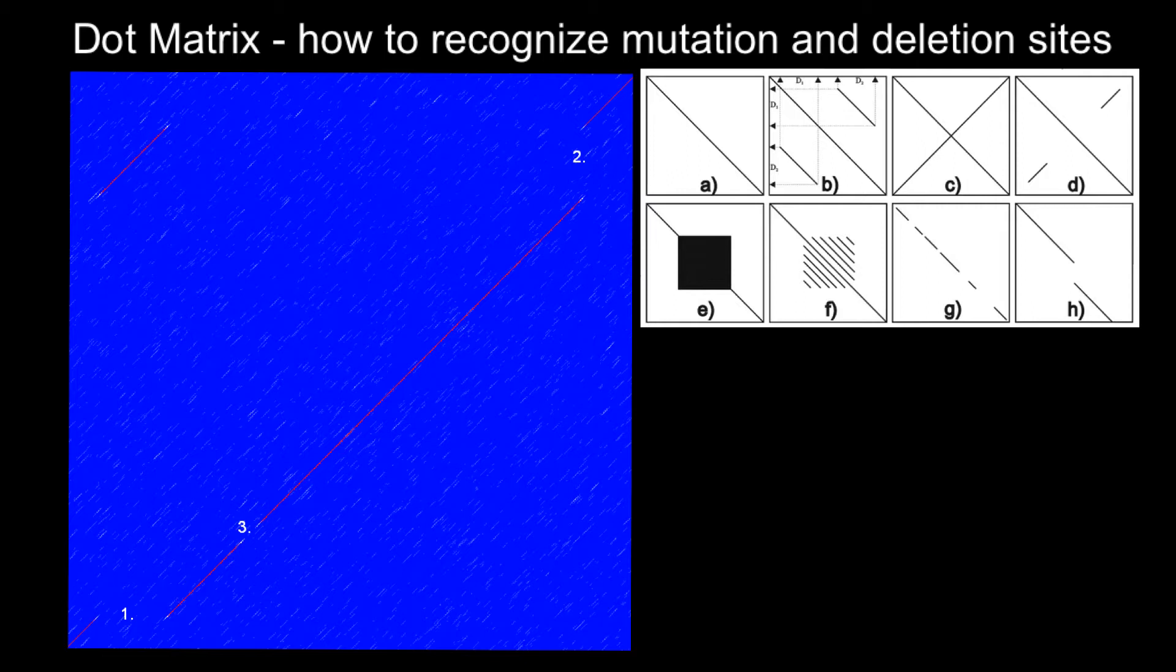In my three previous videos I already explained what pictures A, B, E, and F mean on our dot matrix. Today I'm going to explain what these two pictures mean when we plot two DNA strands, two polypeptide chains, or two RNA strands.